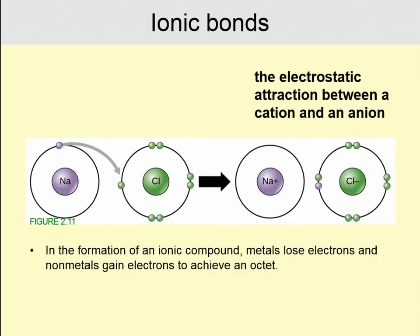Let's talk about ionic bonds first. This is the electrostatic attraction between a cation and an anion. In the formation of an ionic compound, metals lose electrons and nonmetals gain electrons. Sodium has only one valence electron and is going to donate that electron to chlorine, which has seven valence electrons and wants eight. After this happens, sodium has a stable outer shell, and so does chlorine. Sodium is positively charged because it lost an electron, and chlorine is negatively charged because it gained an electron.